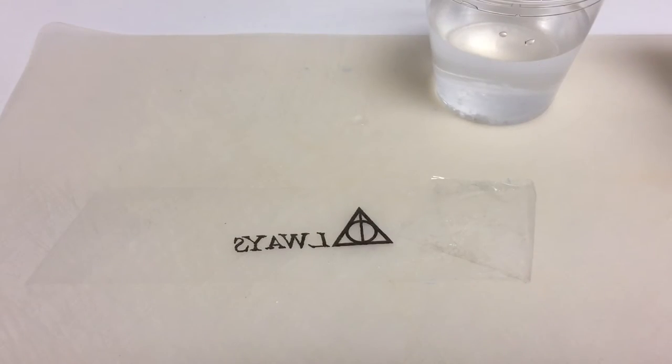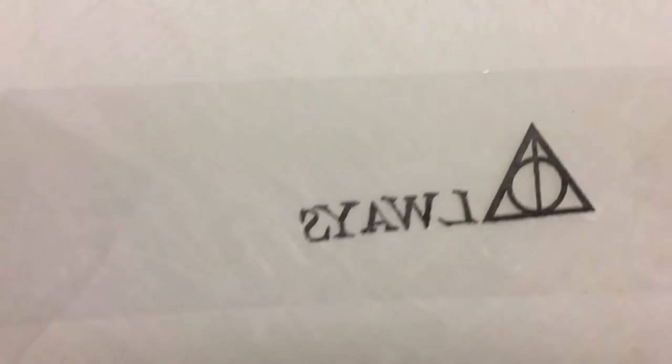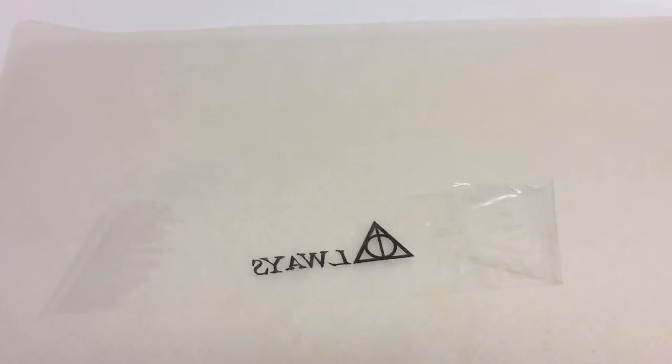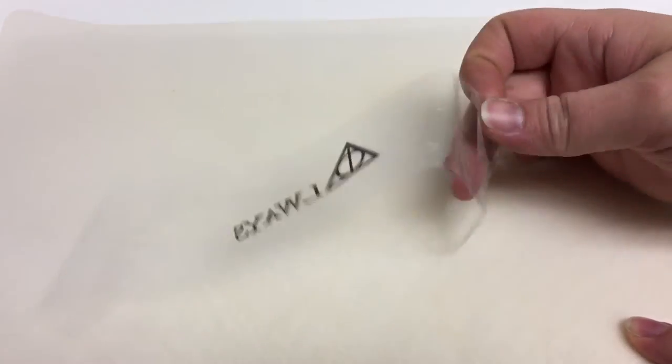Okay, so once we get all of our paper off we want to let this sit and dry, make sure that the water's all gone and then we will be able to use it on our ornament. Okay, so once it's dry and we can see that we have a really nice transfer of the image onto our tape we're going to peel our tape up.